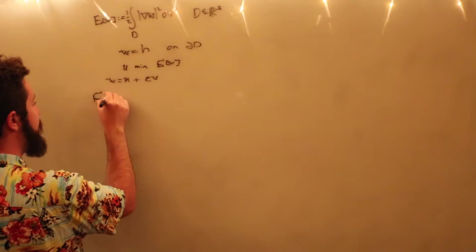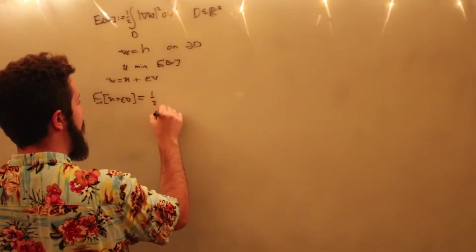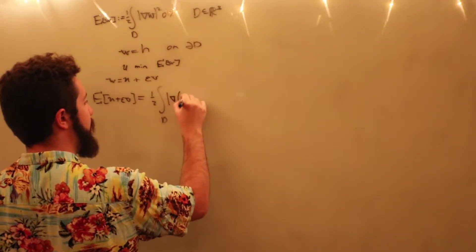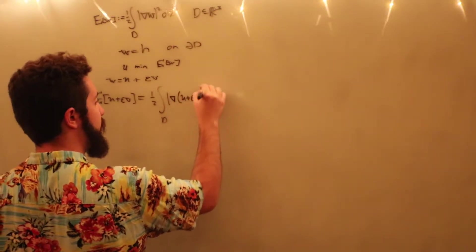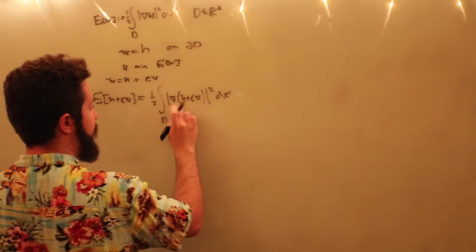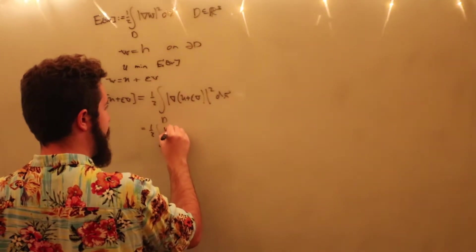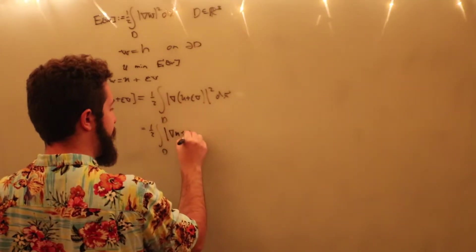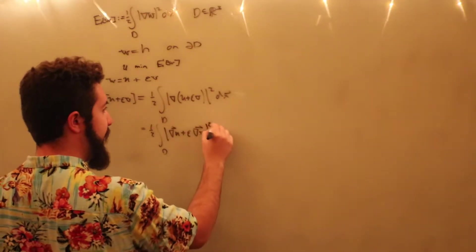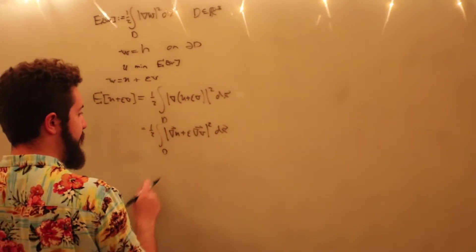So then, if we do this calculation, the energy of u plus epsilon v is going to be equal to one-half integral over d of the gradient of u plus epsilon v magnitude squared dx. And the gradient is going to be equal to one-half integral over d, gradient u plus epsilon gradient v. Where these are, of course, vectors magnitude squared dx. Which could also be written as the dot product of this with itself.